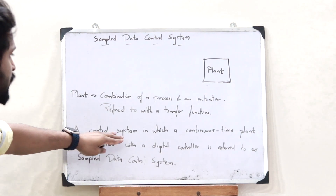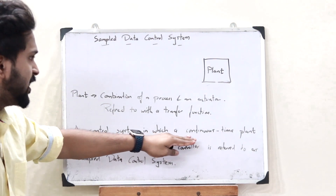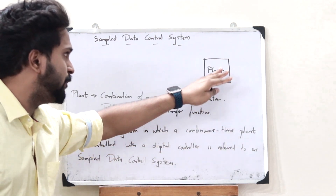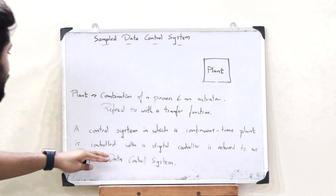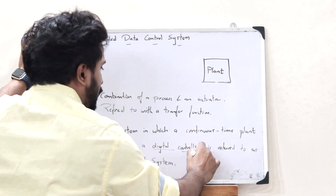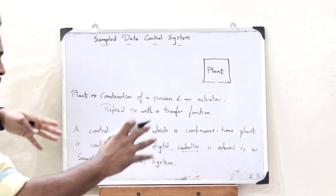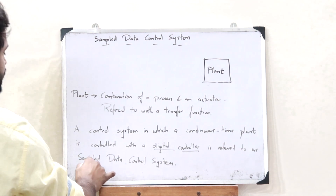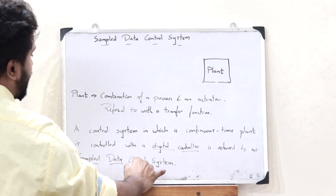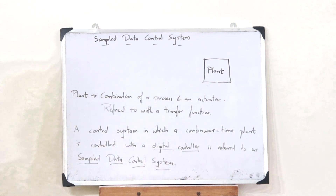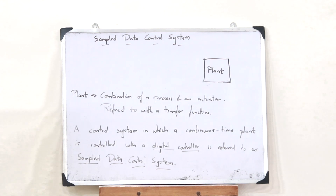A control system in which a continuous time plant is controlled with a digital controller is simply what you refer to as a Sampled Data Control System. As simple as that.